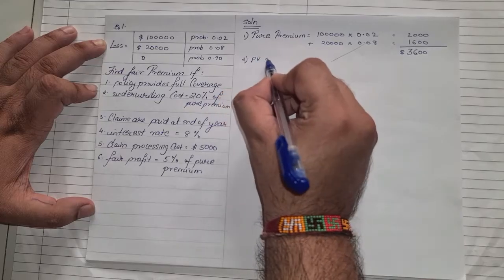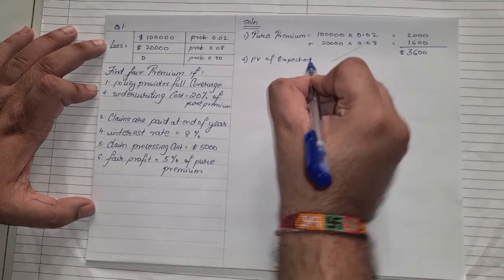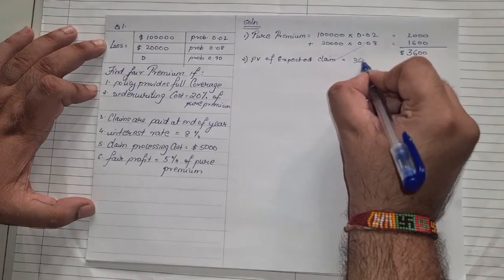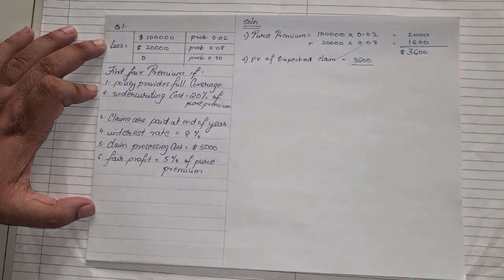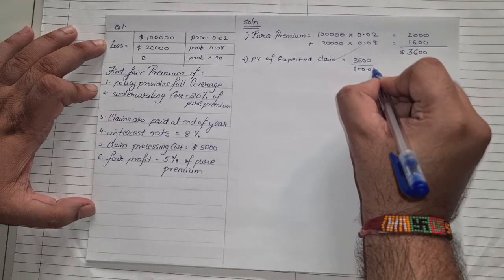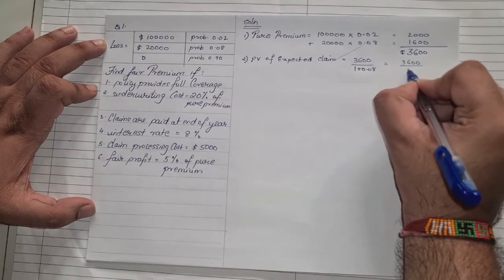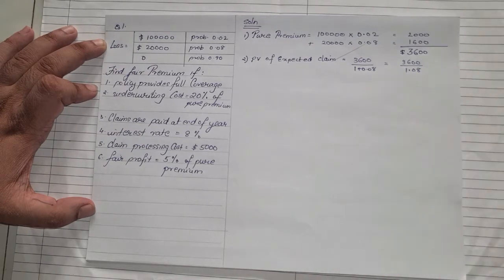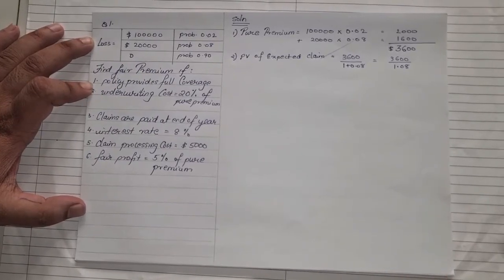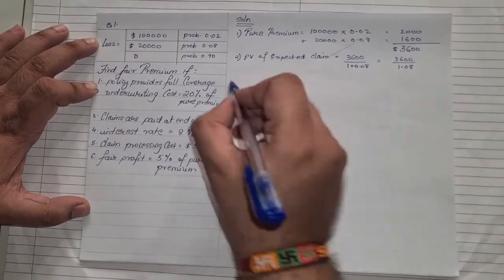Step two: find the present value of expected claim. The formula is pure premium of $3,600 divided by one plus interest rate. Interest rate is 8%, so in decimal form it is 0.08, giving us 3,600 divided by 1.08. We will keep it as 3,600 upon 1.08 for now and divide it at the final stage.